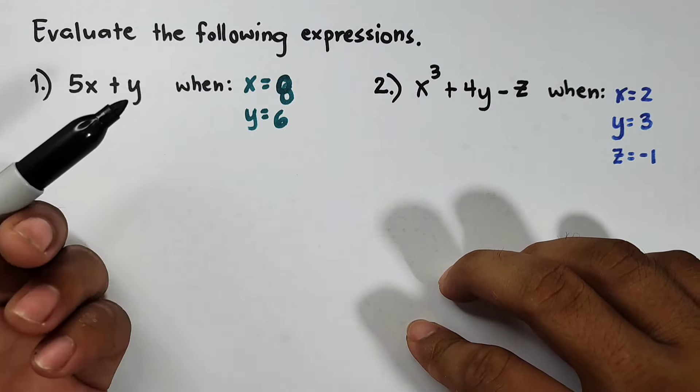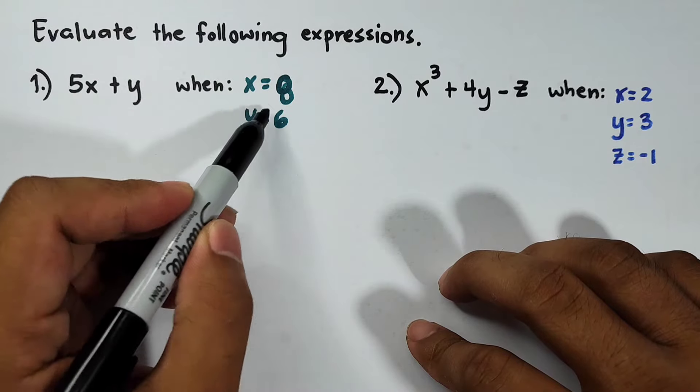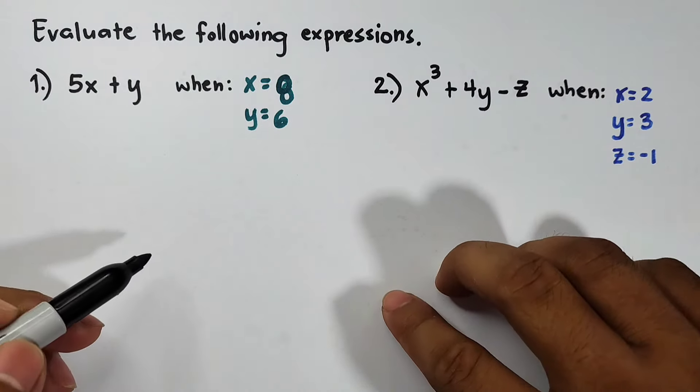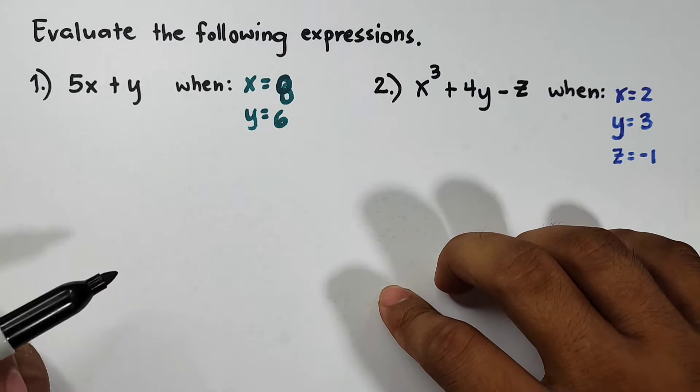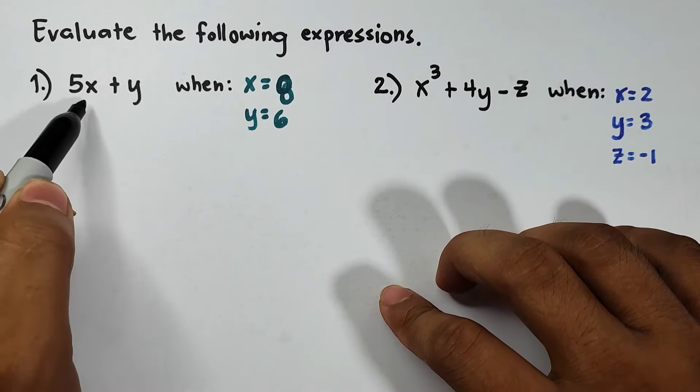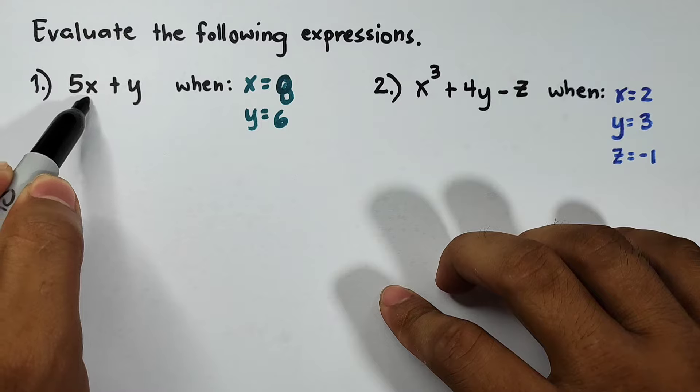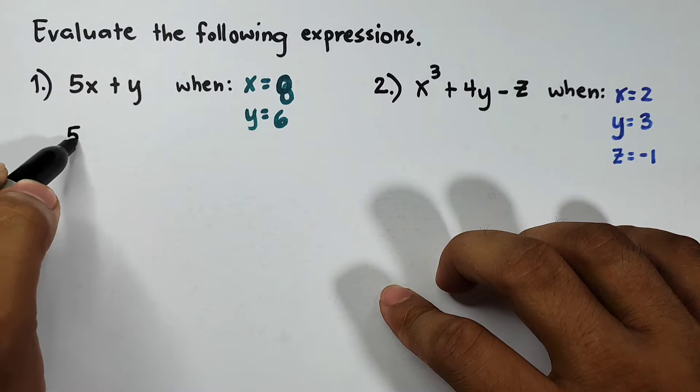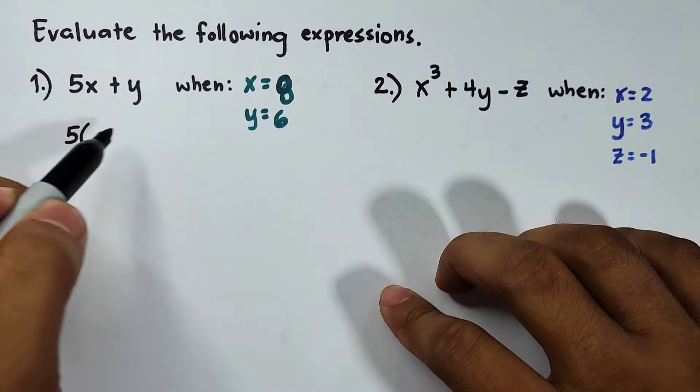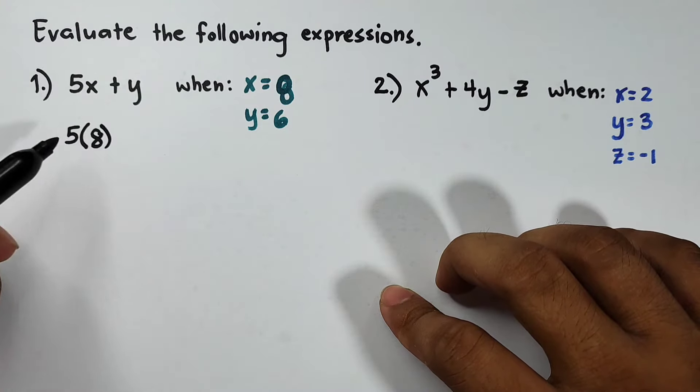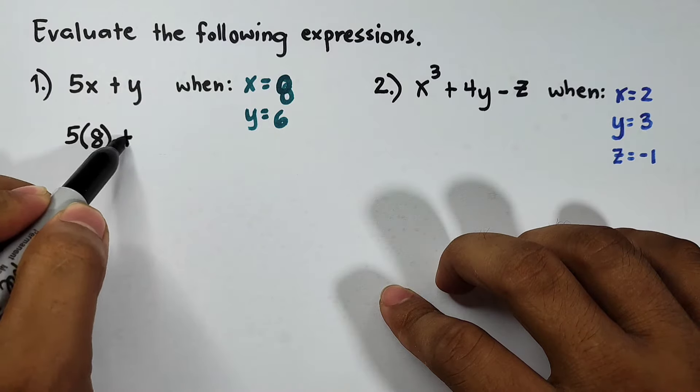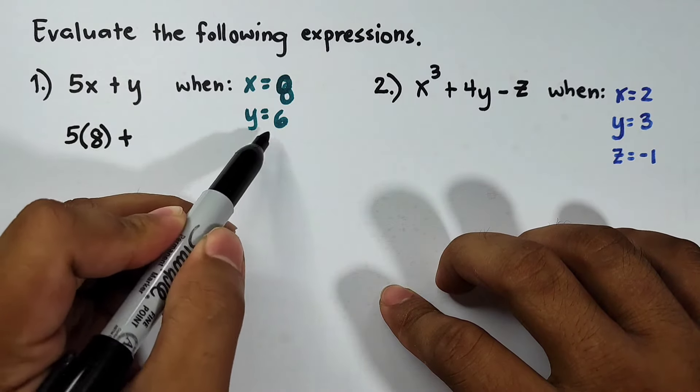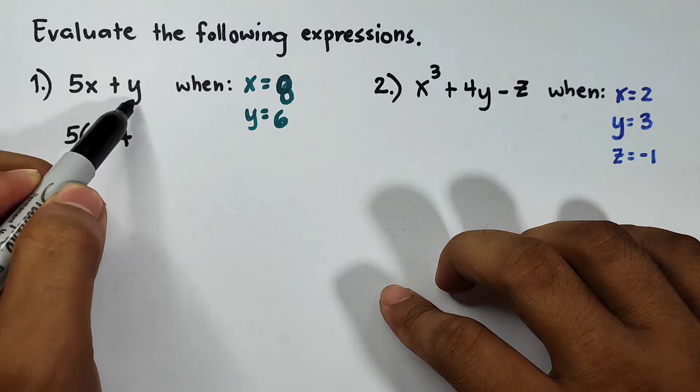And then you will evaluate it when x is equal to 8 and y is equal to 6. So what will happen here in evaluating expressions is that as you can see in 5x, we have your x, you will replace this by the value of 8. So it goes like this: we have 5 times 8 plus, for the variable y, since y is equal to 6, you will replace this variable y by 6.